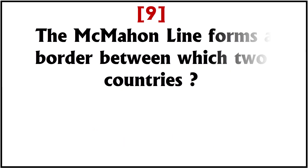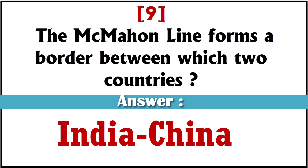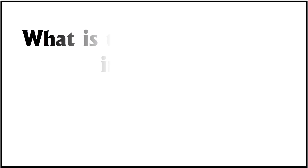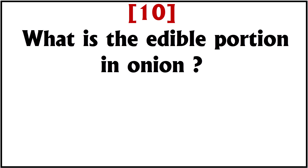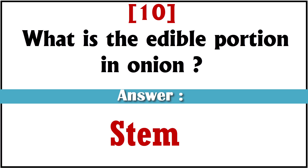The McMahon line forms a border between which two countries? India and China. What is the edible portion in onion? Stem.